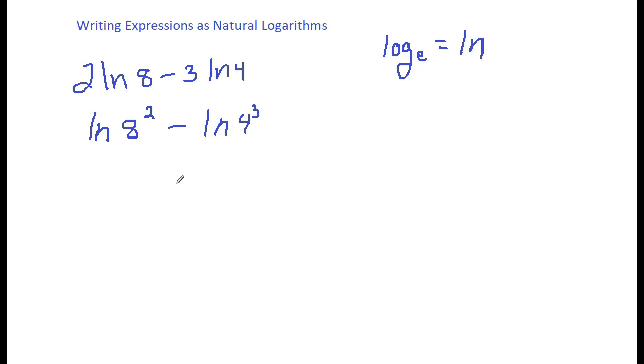Well now, we know that 8 to the second power is 64, because 8 times 8 is 64. So we can say natural log of 64 minus, now 4 to the third power is 64, natural log of 64.